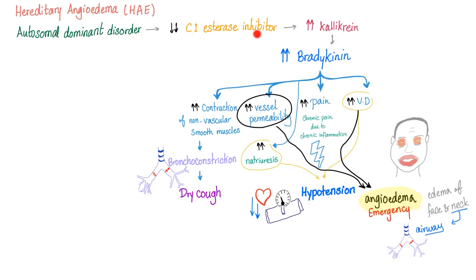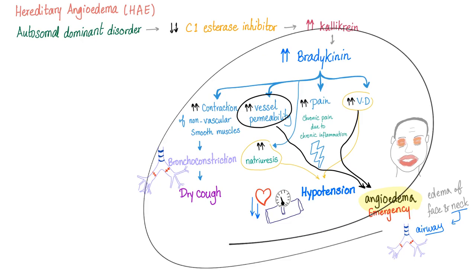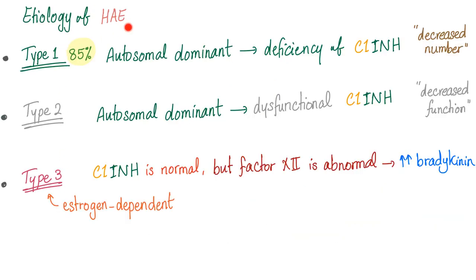Hereditary angioedema is an autosomal dominant disorder — no C1-esterase inhibitor, lots of kallikrein, lots of bradykinin causing symptoms. There are three types of hereditary angioedema, covered with a mnemonic in the previous video.